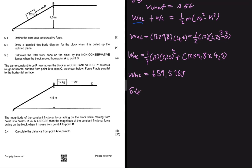Let's go ahead and move to 5.4. So 5.4 is saying that the same constant force F now moves the block at a constant velocity, so constant velocity we know that the work net is going to be close to zero because the change in kinetic energy is going to be zero, if we have constant velocity across a rough horizontal surface from point B to point C. The magnitude of the constant friction force acting on the block while moving from point B to C is 42 newtons larger than the magnitude of the constant frictional force acting on the block when it is moved from point A to B. And then let's calculate the distance from A to B.